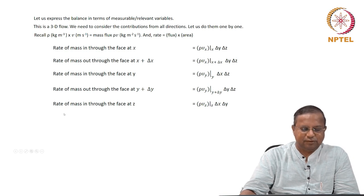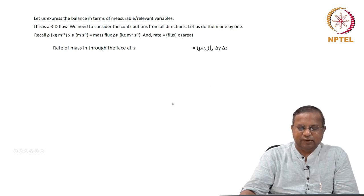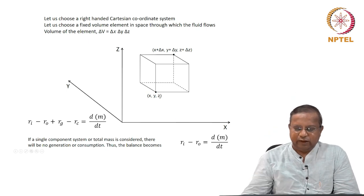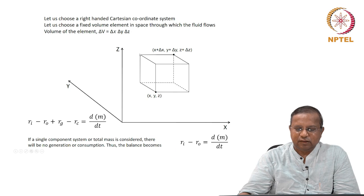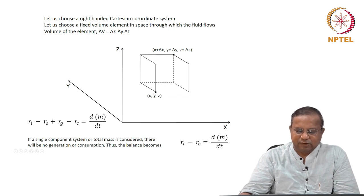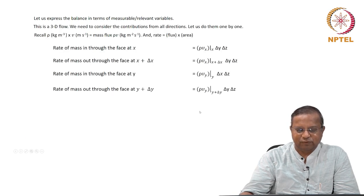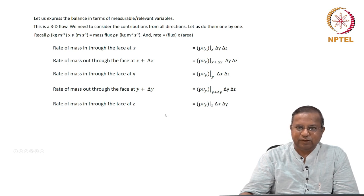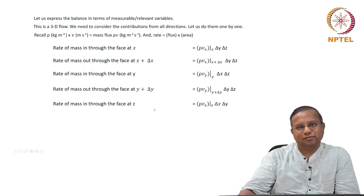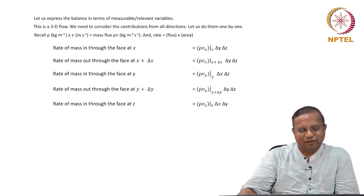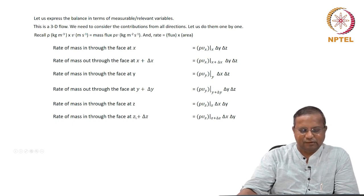The rate of mass in through the face at z: z is in this direction. The entry is through the face at z and the exit is through the face at z plus delta z. The area of both those faces is delta x times delta y. Rate of mass in through the face at z is rho times vz at z times delta x times delta y. And the rate of mass out through the face at z plus delta z is rho times vz at z plus delta z times delta x times delta y.